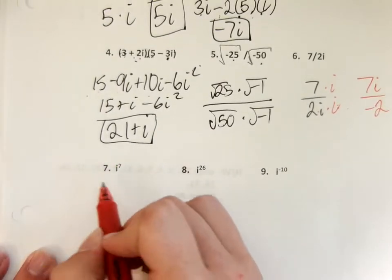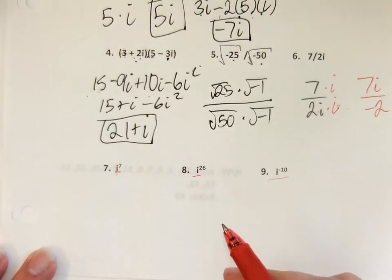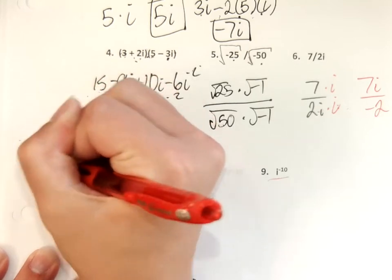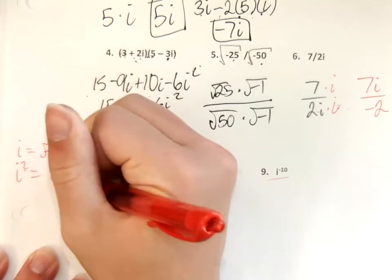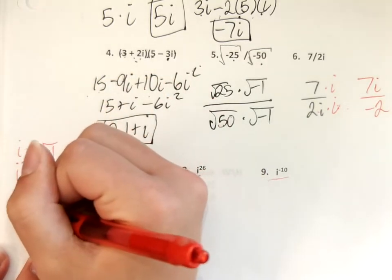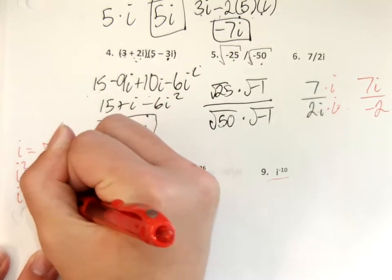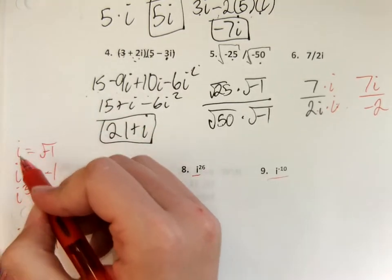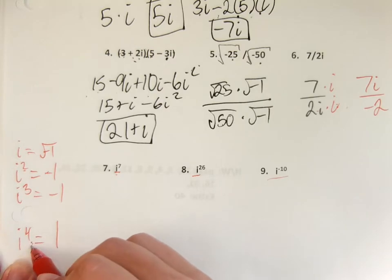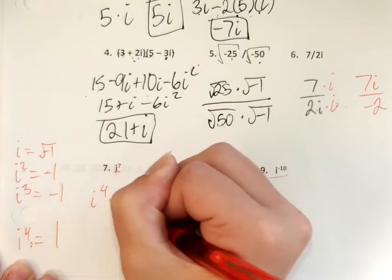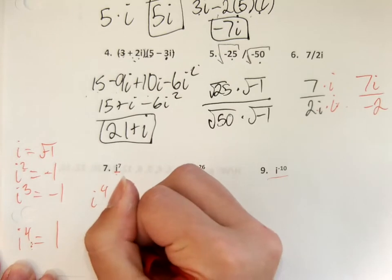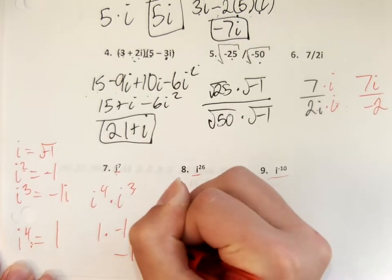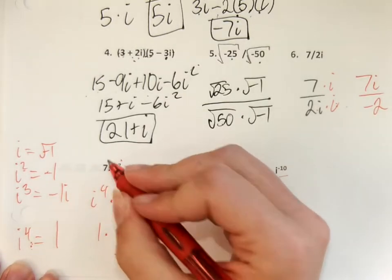Down here we have i to many powers. The pattern is: i equals the square root of negative one, i squared equals negative one, i cubed is negative i, and i to the fourth is one. When you're doing this, you want to factor out a multiple of four to get the closest answer. So if we factor out i to the fourth, we'd have i to the fourth times i to the third. i to the fourth is one, and one times i cubed is negative i. So i to the seventh power is negative i.